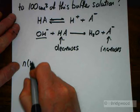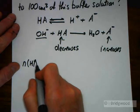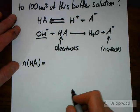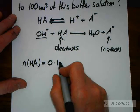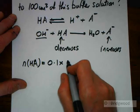So the number of moles of our HA is going to be equal to 100 cubic centimeters. Let's make that 0.1 cubic decimeters multiplied by the concentration of the ethanoic acid, which was 0.1.